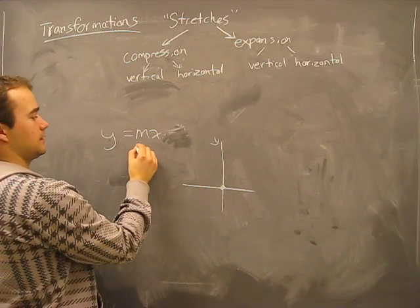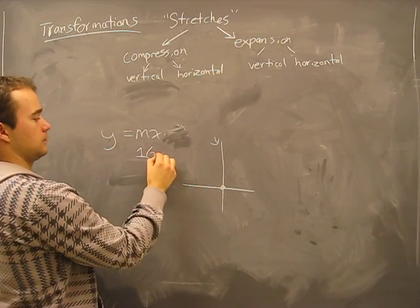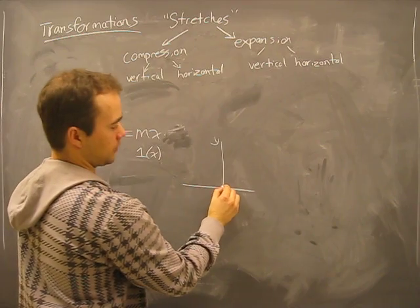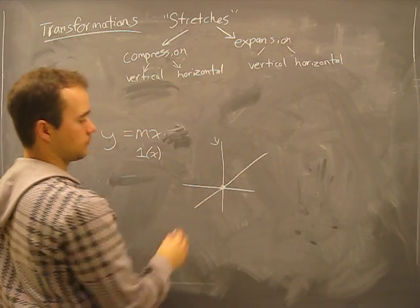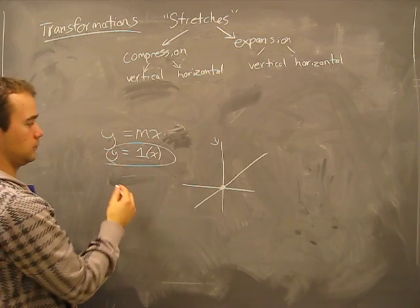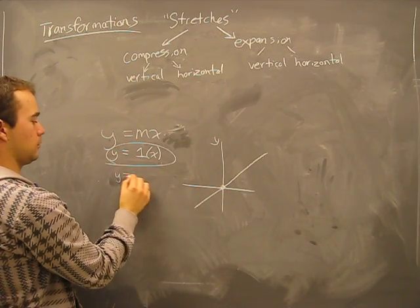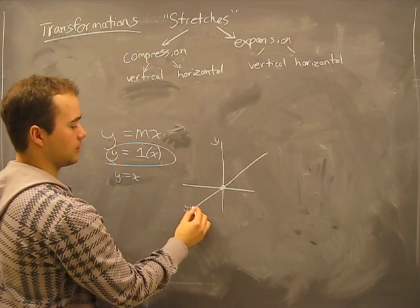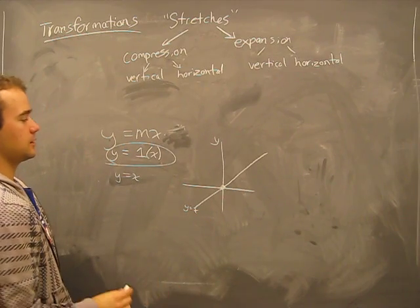And let's say that the slope is one. So we have a line like this. What we really have is y equals x. That's the y equals x line. Pretty straightforward, nothing surprising here.